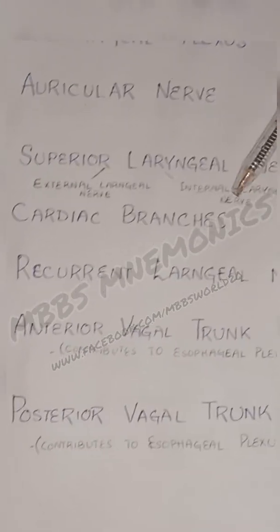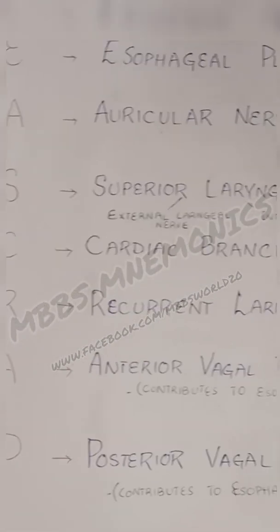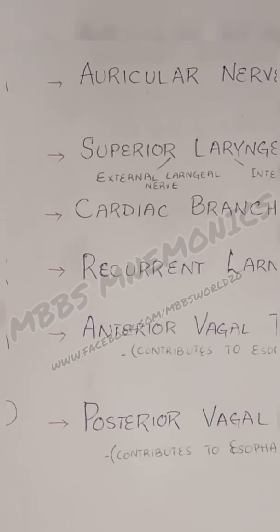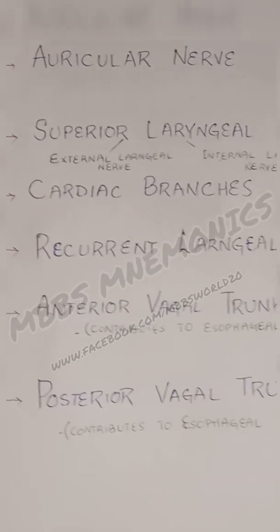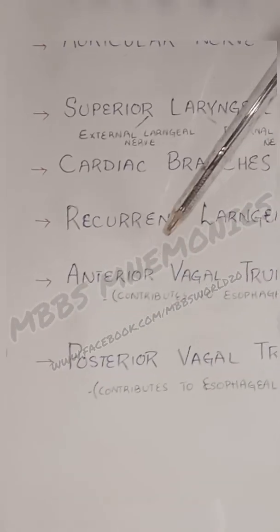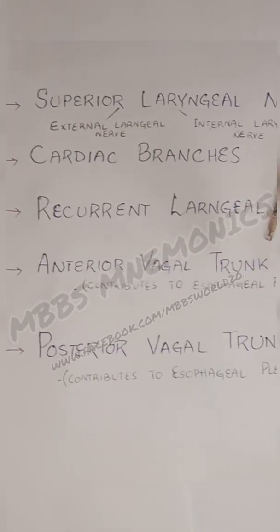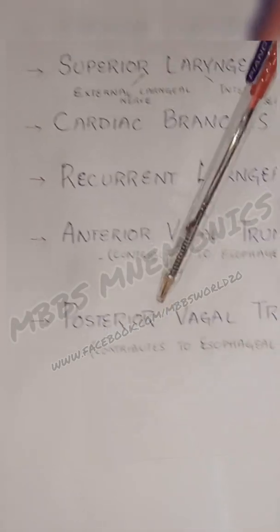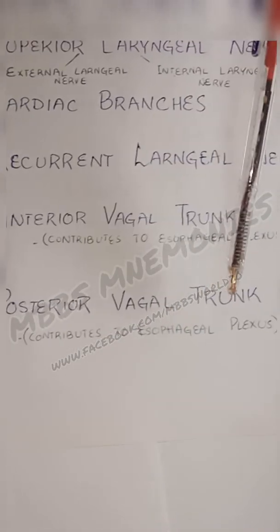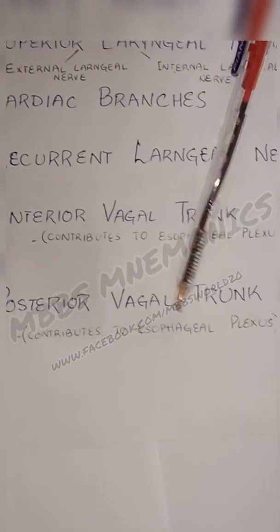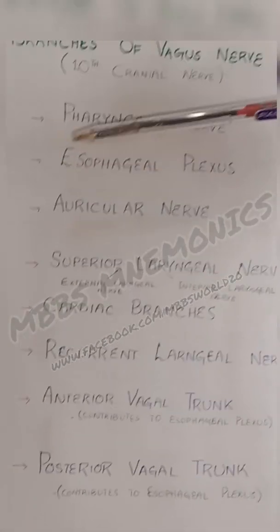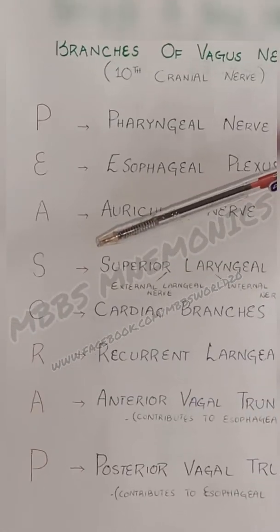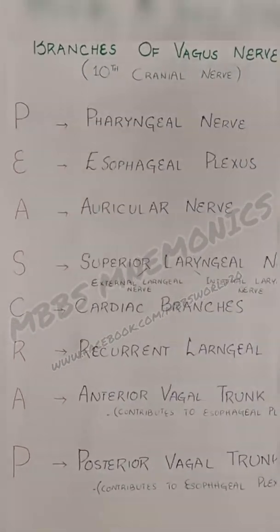C is for cardiac branches, R for recurrent laryngeal nerve, A for anterior vagal trunk — which contributes to the esophageal plexus — and P for posterior vagal trunk, which also contributes to the esophageal plexus. So the mnemonic is P SCRAP.